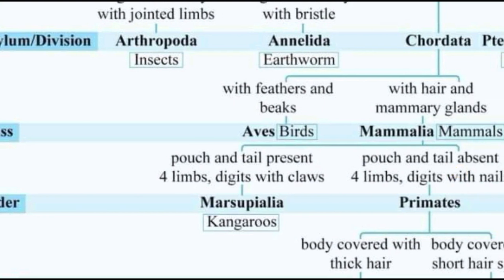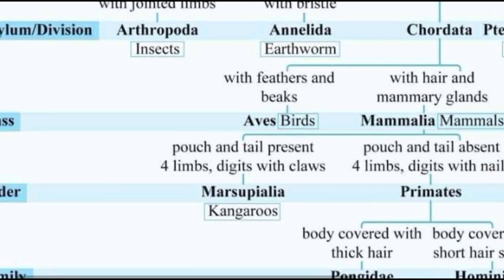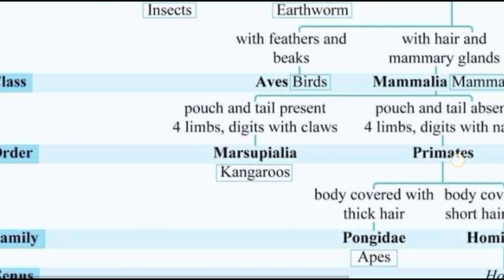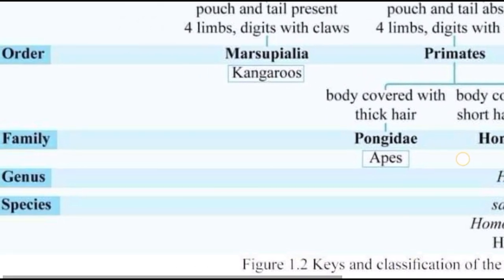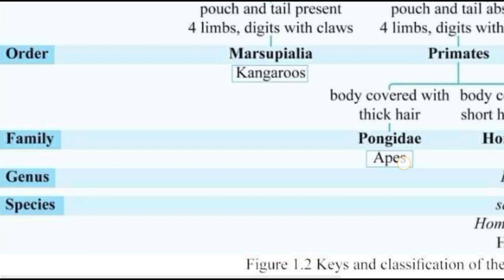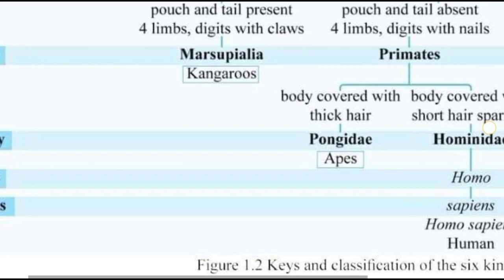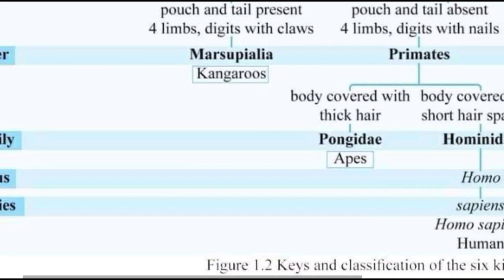Order — digits with nails. Digits. The primates. Body covered with thick hair. Body covered with short hair, sparsely covering the body.